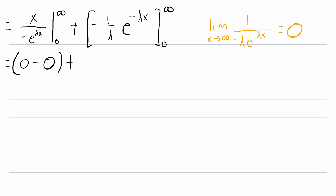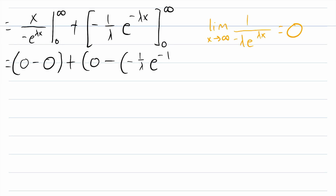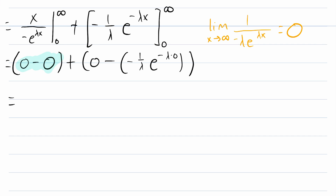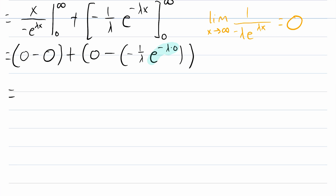Now we evaluate the remaining integral piece from 0 to infinity. As x approaches positive infinity, e to the negative lambda x approaches 0, so the whole expression approaches 0. We then subtract the value at x equals 0: negative 1 over lambda times e to the negative lambda times 0. Since e to the 0 is 1, we're left with minus negative 1 over lambda, which is positive 1 over lambda.